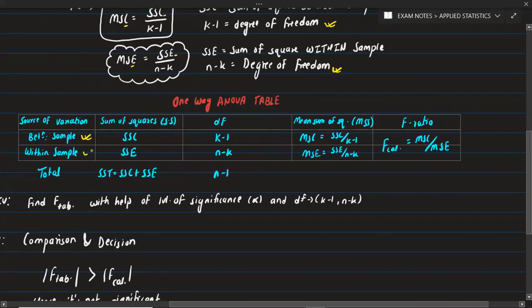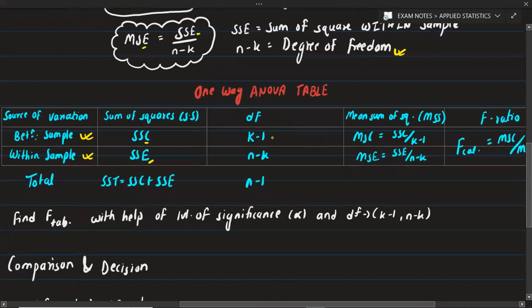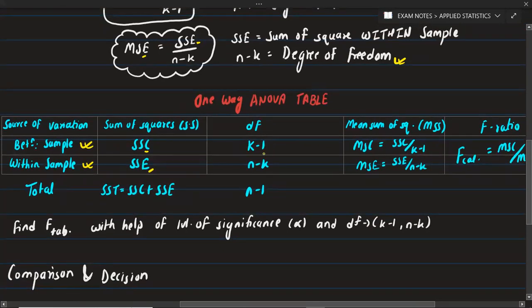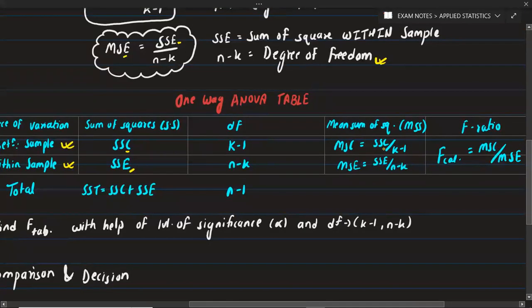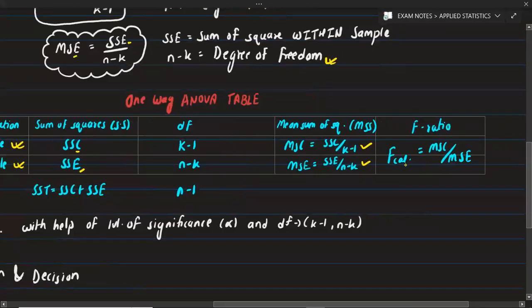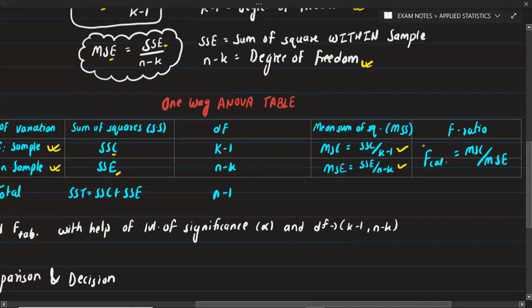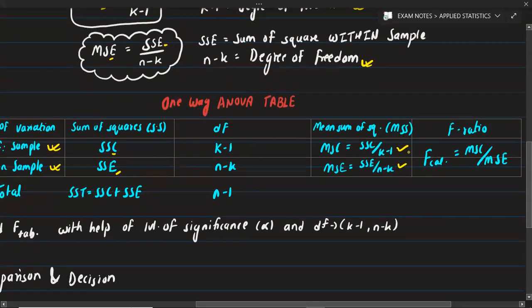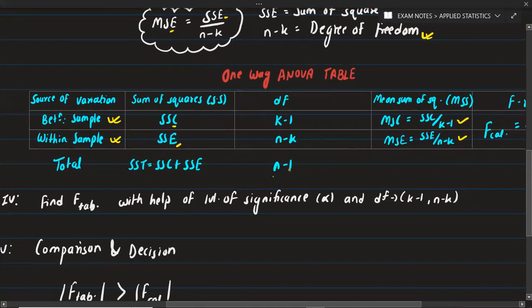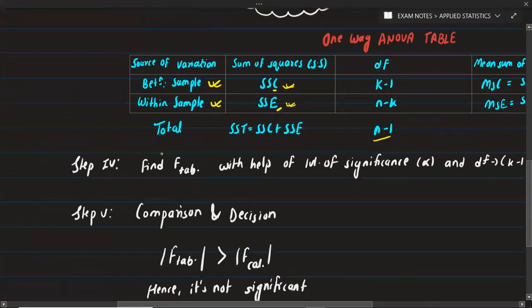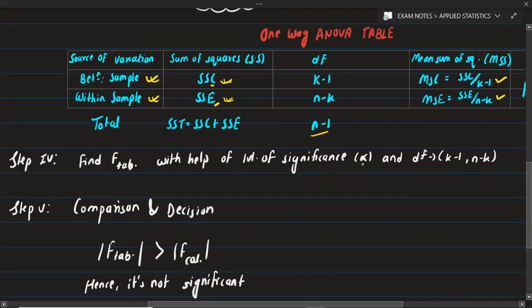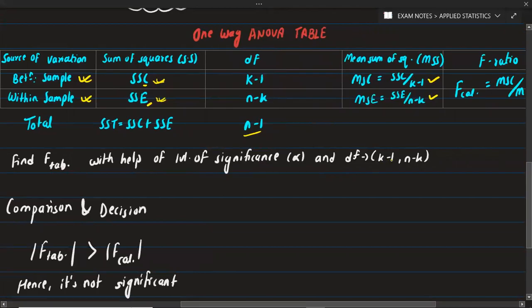In the source of variation, we have between samples (C) and within samples (E). SSC has degree of freedom k minus 1, and SSE has degree of freedom n minus k. MSC equals SSC upon k minus 1, and MSE equals SSE upon n minus k. F calculated equals MSC upon MSE. We then find F tabulated using the level of significance alpha and degrees of freedom k minus 1 comma n minus k.